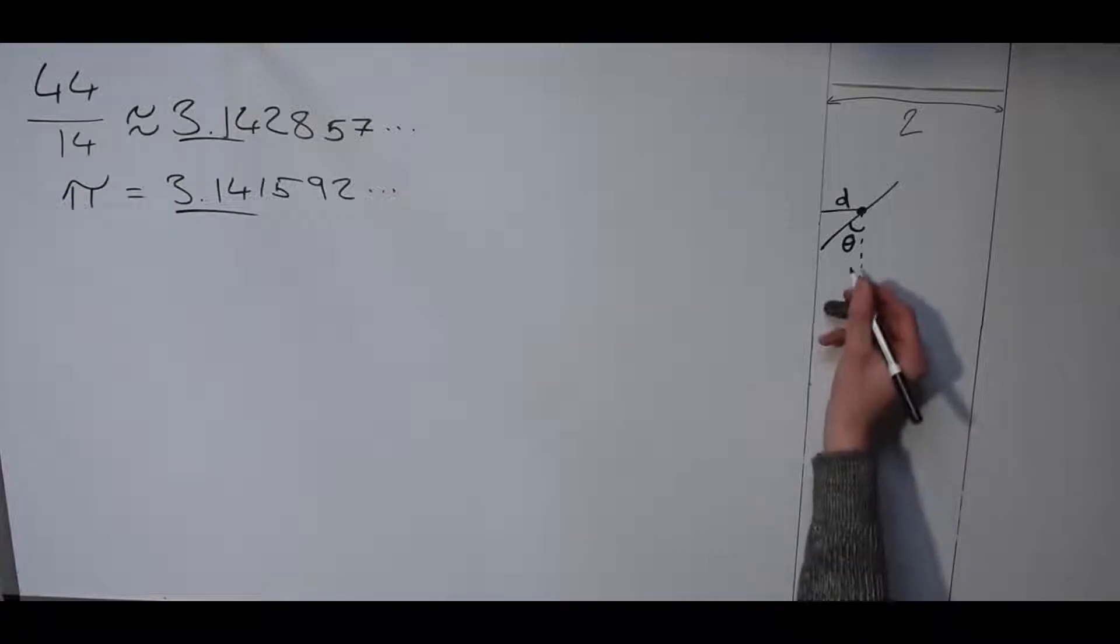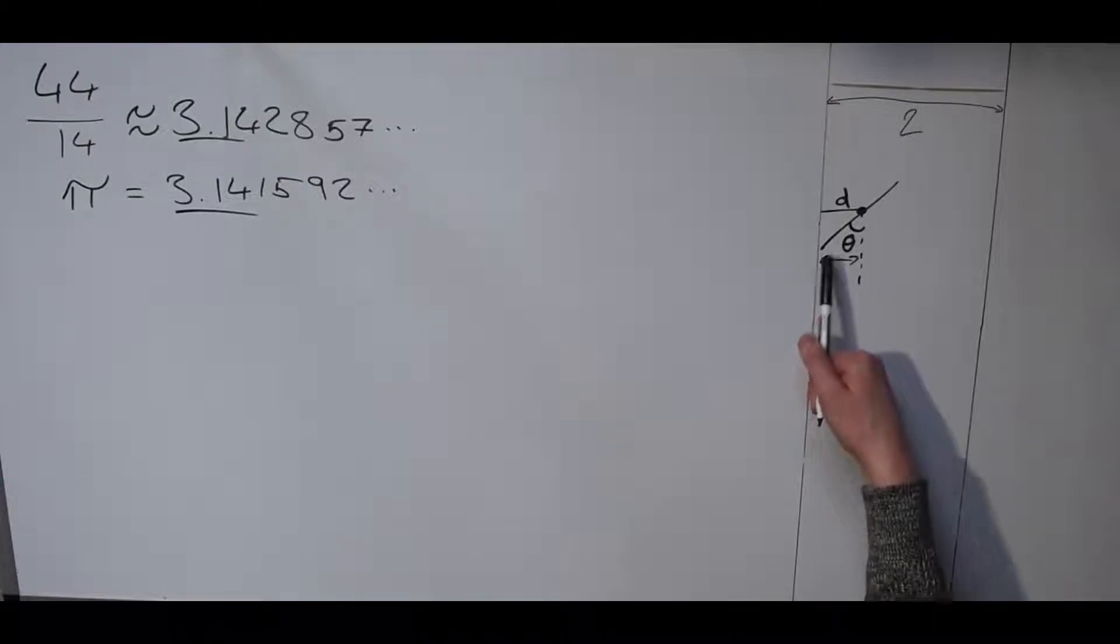If we want the match to cross the line, we want this distance here, which is half the length of the match. The match is length of one, so half times sine of theta.